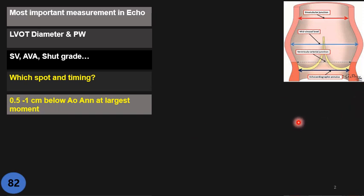Let's first see the anatomy of the aortic root. The aortic root has four spots: sinotubular junction, sinus of Valsalva, and aortic ring. The aortic valve ring has two spots: one we call the ventricular-arterial junction or surgical annulus — the line from the side of the cusp to the arterial wall — and the one below, facing the LV/LVOT, we call the echocardiographic annulus or virtual basal ring. In many measurements we use this virtual basal ring diameter.